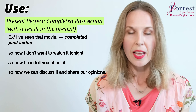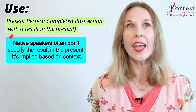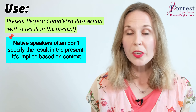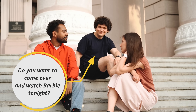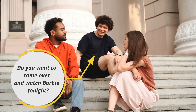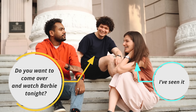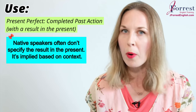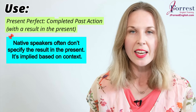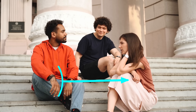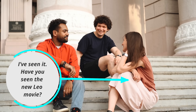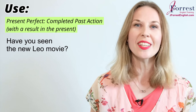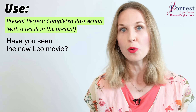Native speakers rarely say the 'so now' — it's just implied based on context. So your friend could say, 'Do you want to come over and watch Barbie tonight?' And you can reply, 'I've seen it.' Your friend understands you don't want to watch it. You don't need to vocalize that. You might say 'I've seen it' and then ask, 'Have you seen the new Leo movie?' — also using the present perfect.